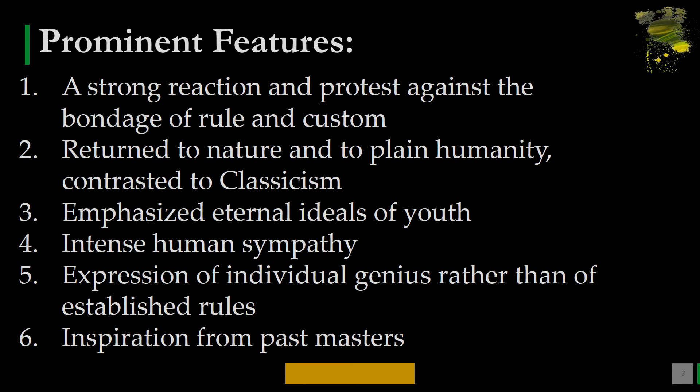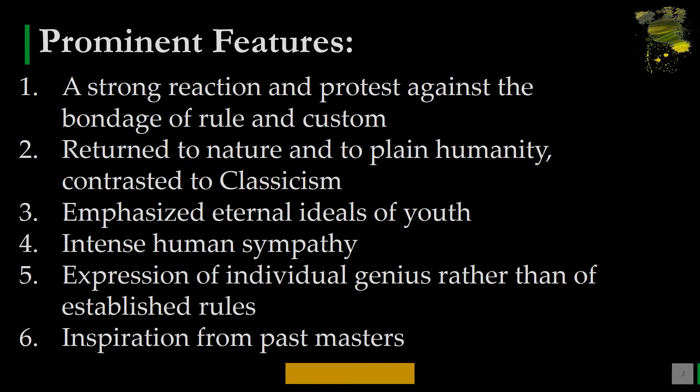The fifth feature is the expression of individual genius rather than established rules. This poetry is completely based on individual genius; poets borrowed material from common humanity and addressed common issues for the first time. Poets like Thomas Gray and James Thompson used their imagination and rejected classical rules, customs, and styles of writing. They expressed their individual genius rather than following established rules.